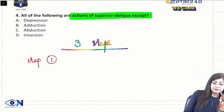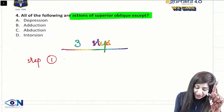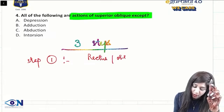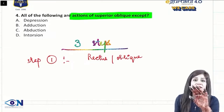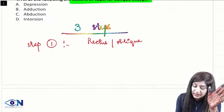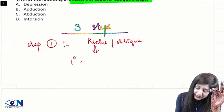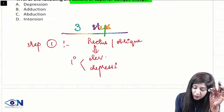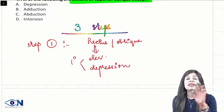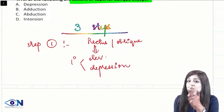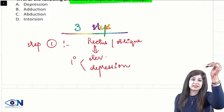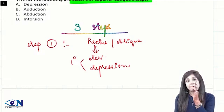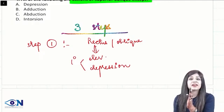Step number one: first of all, you have to see whether it's a rectus muscle or it's an oblique muscle. If it is a rectus muscle, then the primary action is straight up or straight down, because the rectus muscles will always go straight in the same direction. Superior rectus — elevation; inferior rectus — depression; medial rectus — adduction; and lateral rectus — abduction.